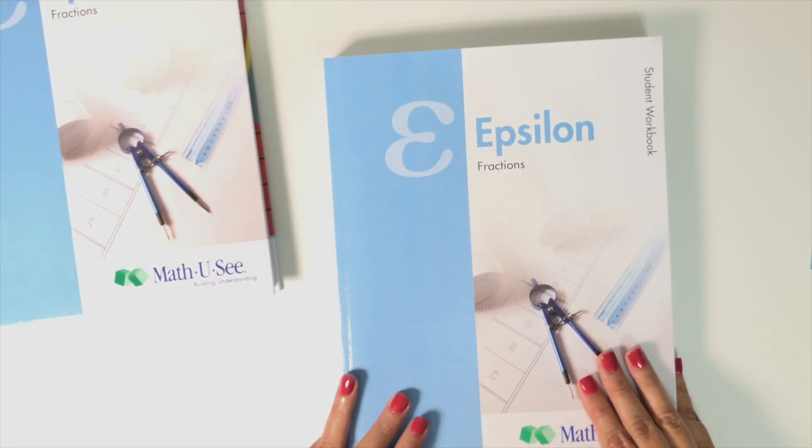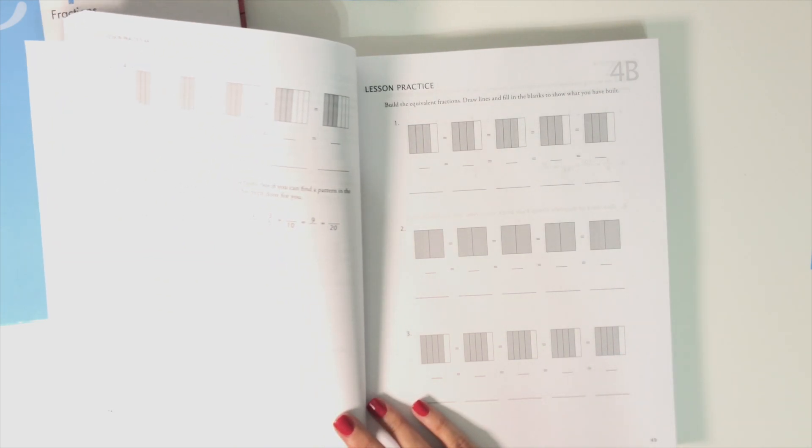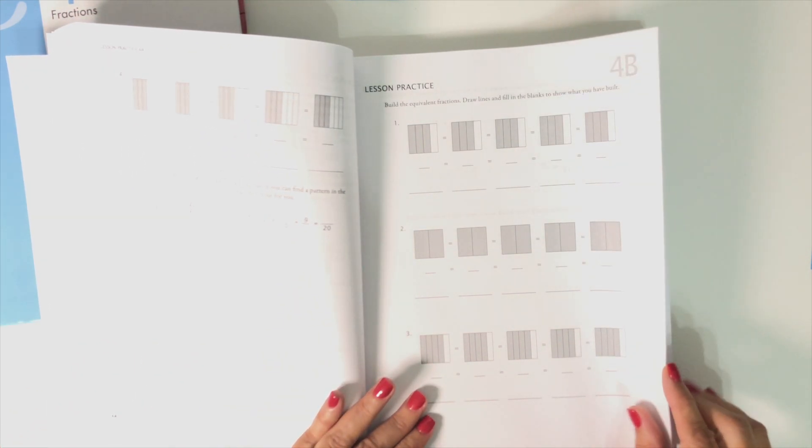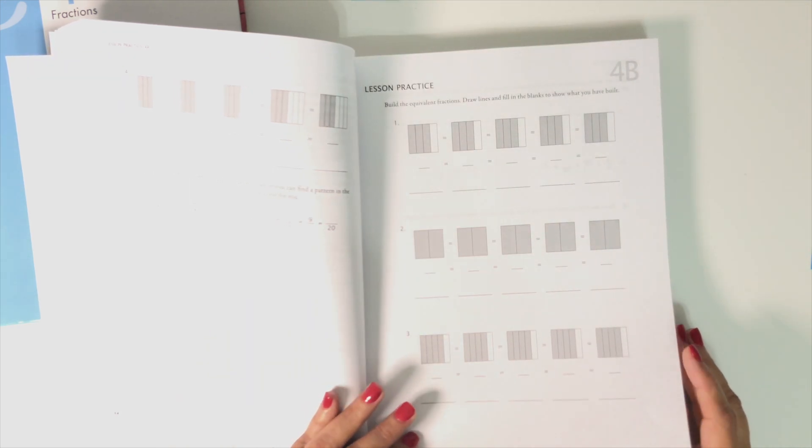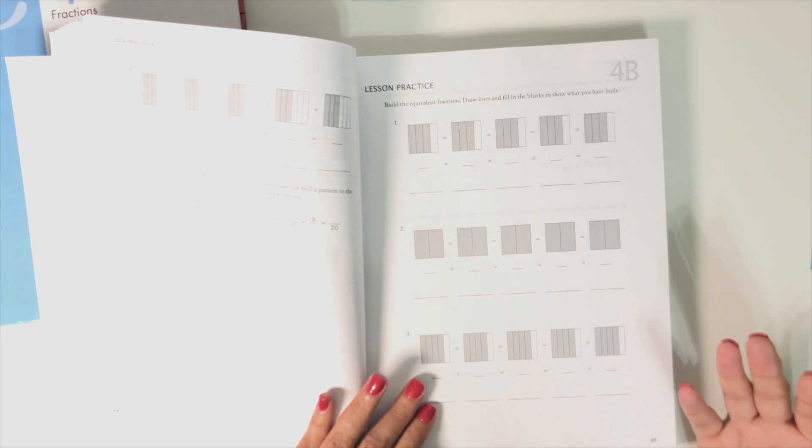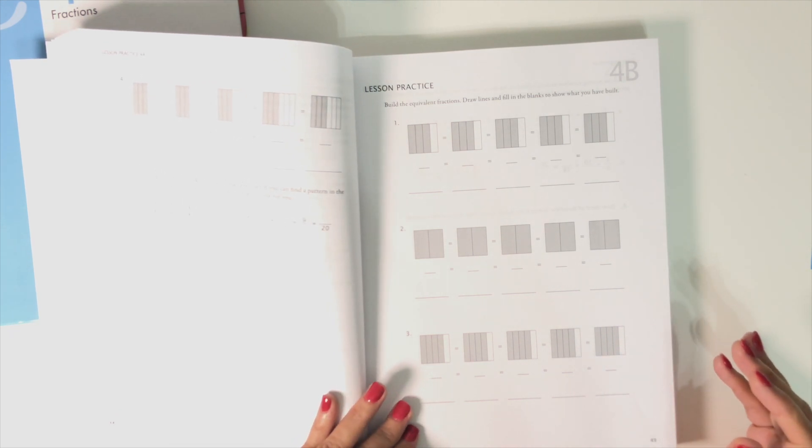The amount of time a student will need to spend on this every day will depend on how you want to use it and also on how well your student understands that concept. So for a simple concept if you just have them doing one worksheet a day then they could be done with that in 10 minutes. If it's a more difficult concept or like for example long division and especially if you have them do more than one worksheet a day they could be spending 45 minutes on that.